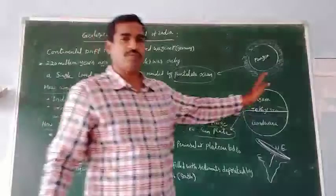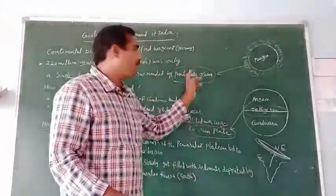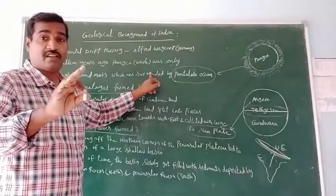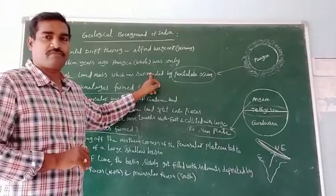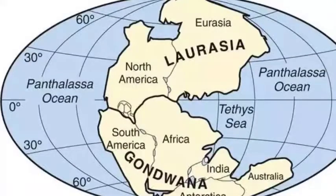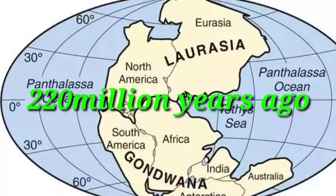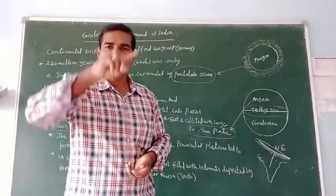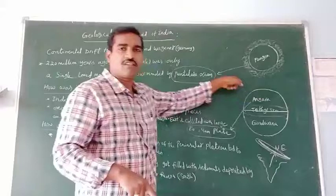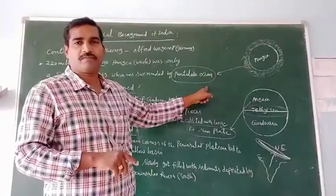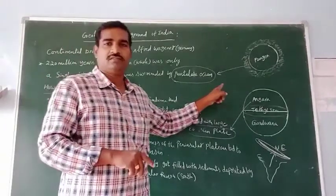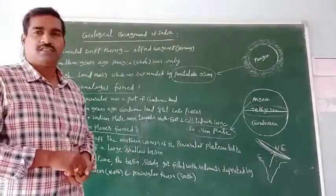Look at the board. The continental drift theory was proposed by Alfred Wegener, who was from Germany. According to this theory, 229 million years ago there was a single supercontinent known as Pangea, which was surrounded by the Panthalassa ocean.